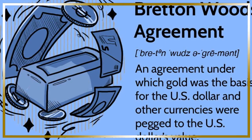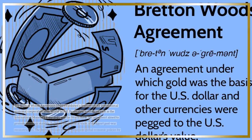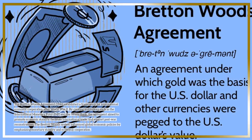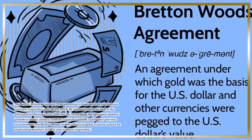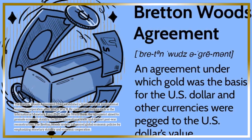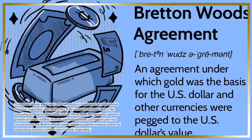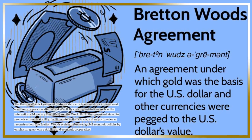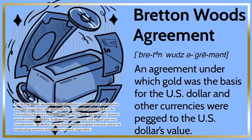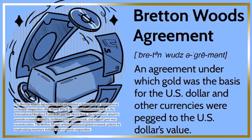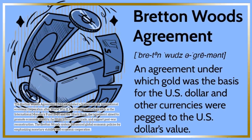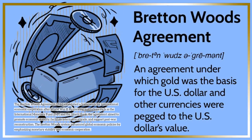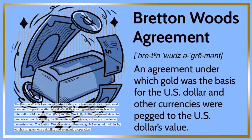The Bretton Woods Agreement of 1944 established a framework for international economic cooperation after World War II. By creating institutions such as the International Monetary Fund (IMF) and the World Bank, the agreement aimed to promote economic stability, facilitate international trade, and support post-war reconstruction. The Bretton Woods system influenced global economic policies by emphasizing monetary stability and economic cooperation.